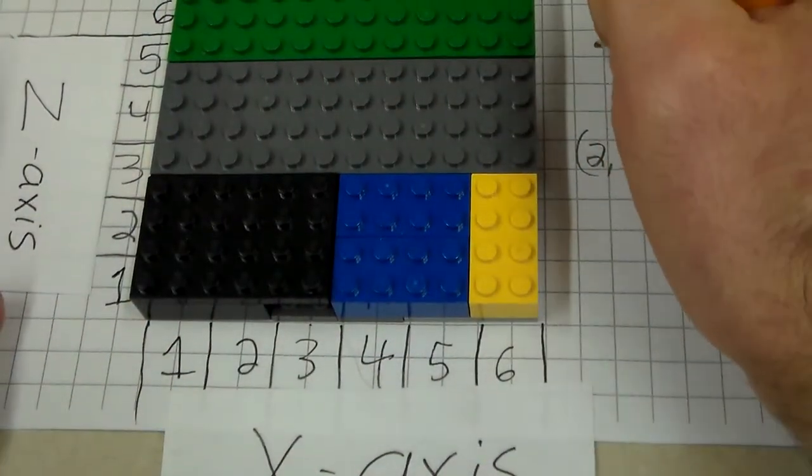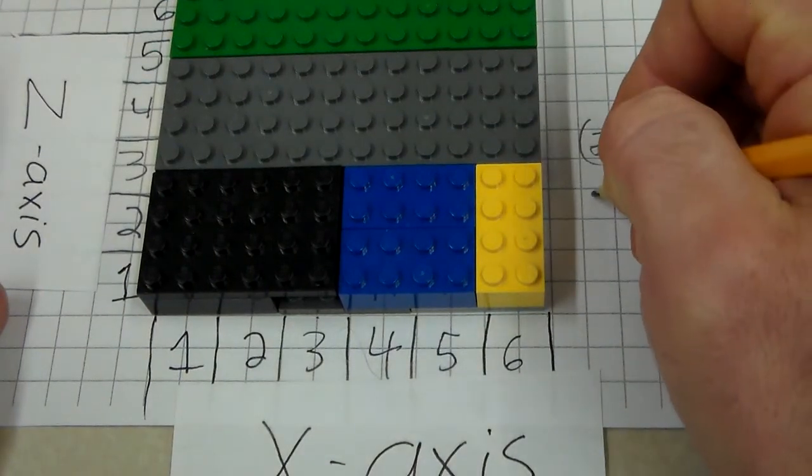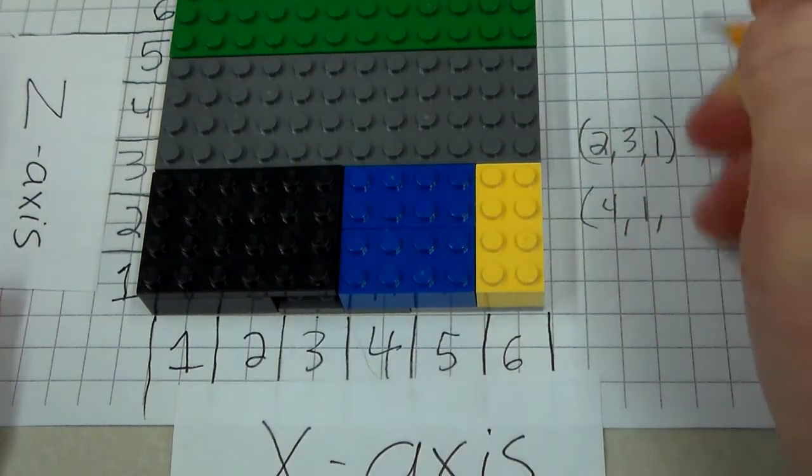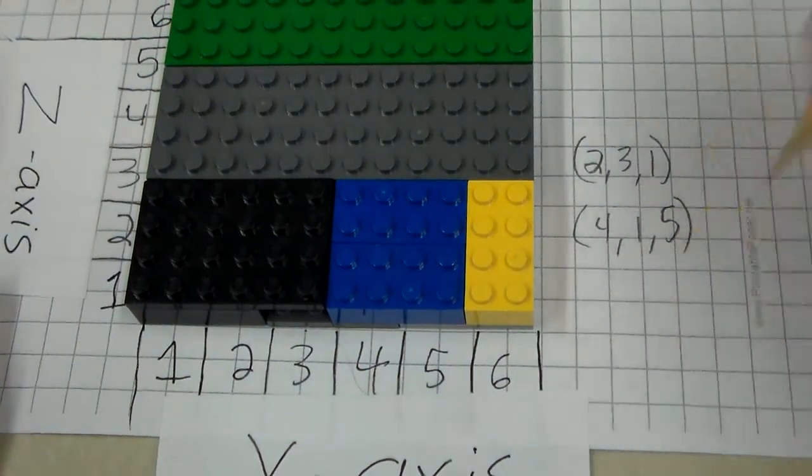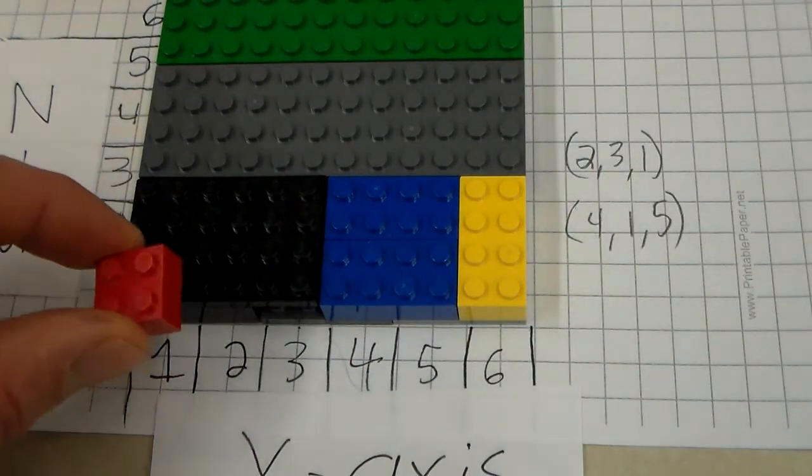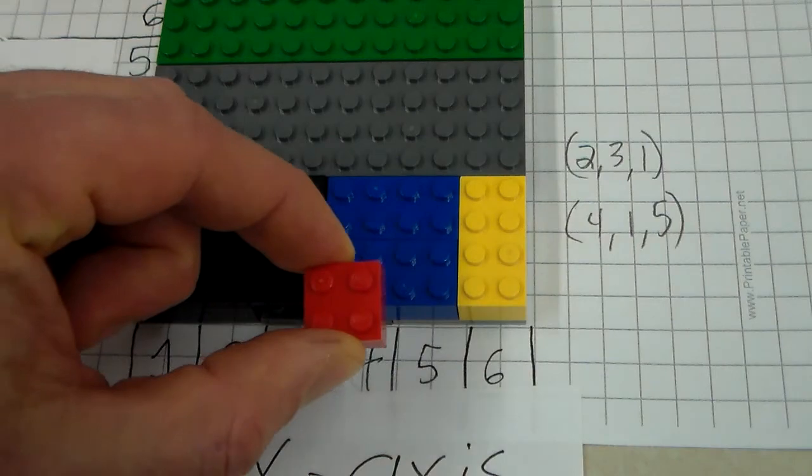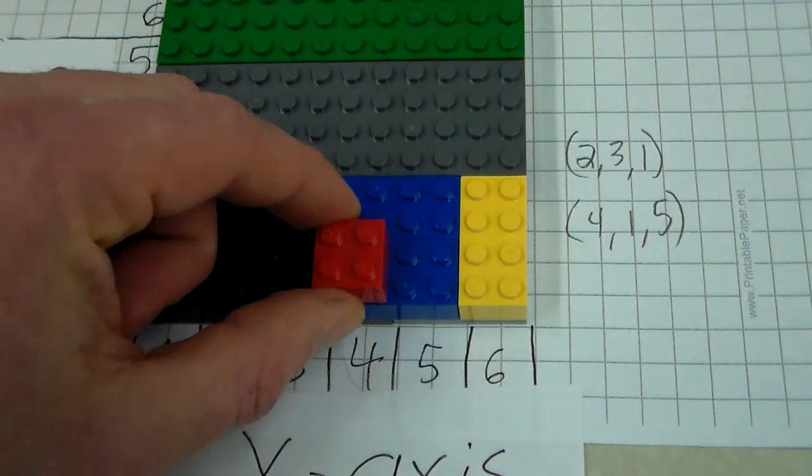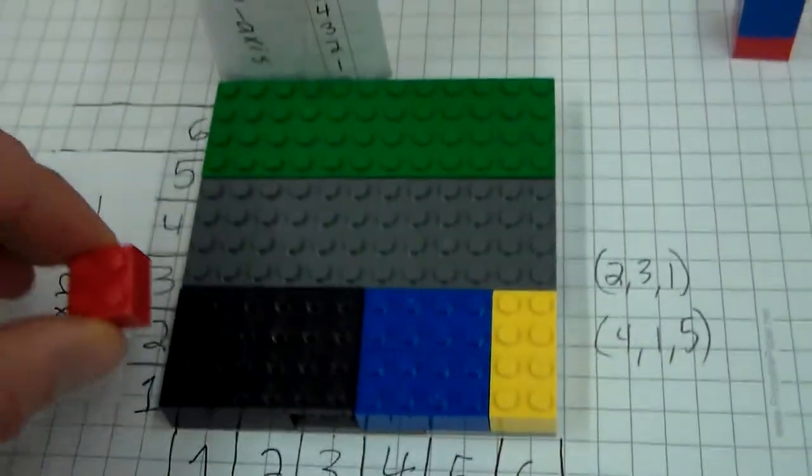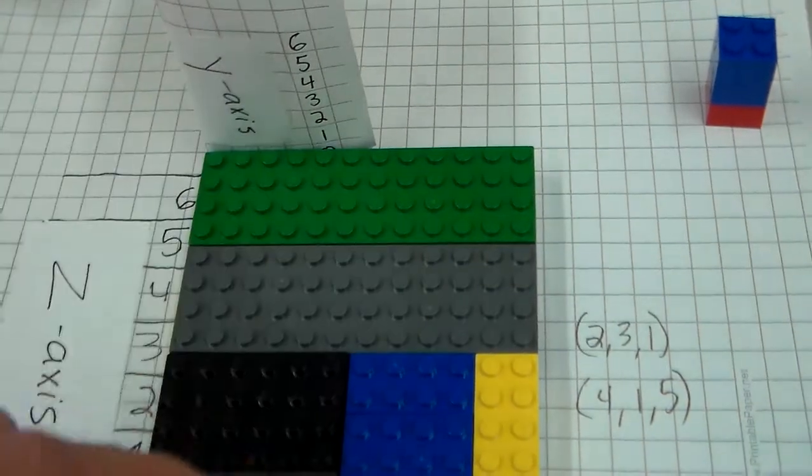Let's do one that's not floating. Let's do the point 4, 1, 5. So I would move my block over to 4. 1 is the first one up, because if you look at my y-axis, 1 is my first one up.